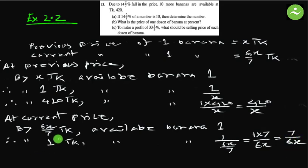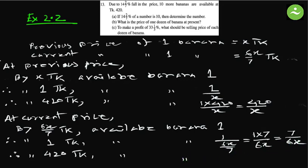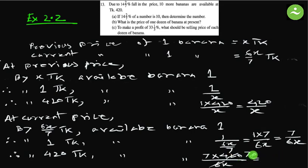Therefore by 420 taka, available bananas at current price = 7/6x multiplied by 420. Simplifying: divide both 420 and 6 by 6, giving 70. So we get 7 × 70 / x = 490/x bananas.